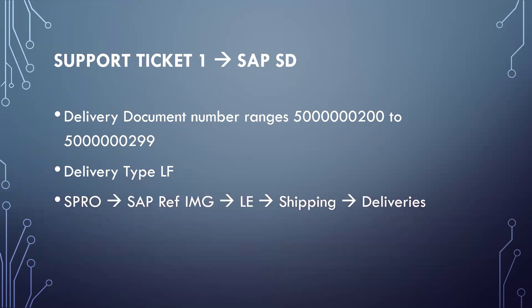The solution: go to SPRO, SAP Reference IMG, Logistics Execution, Shipping and Deliveries. We have to create the number ranges inside this and assign the number ranges to LF delivery.